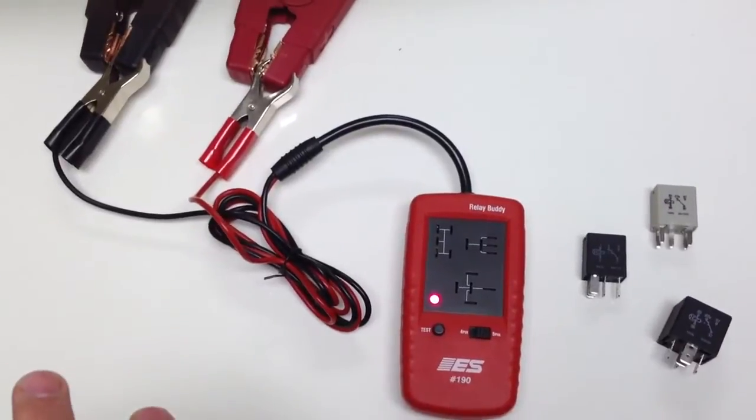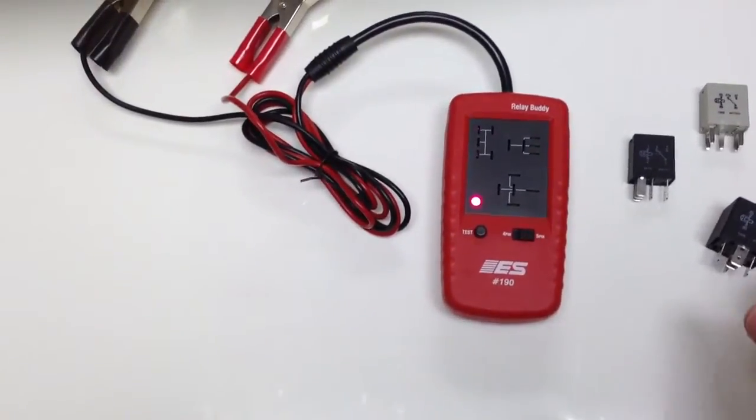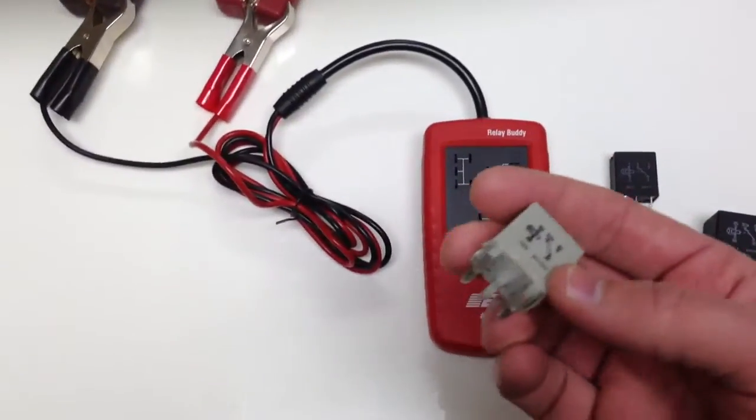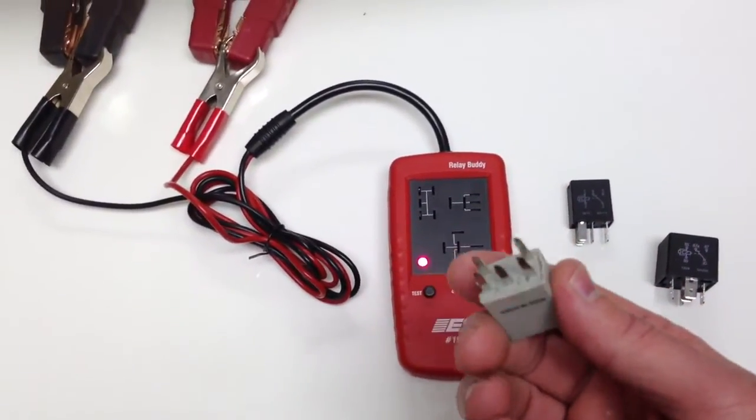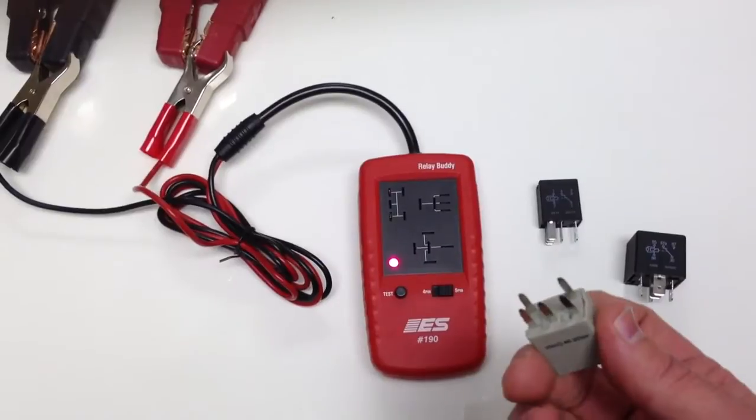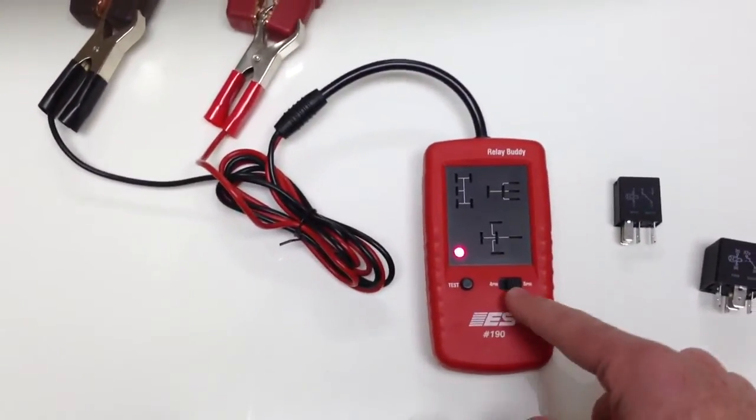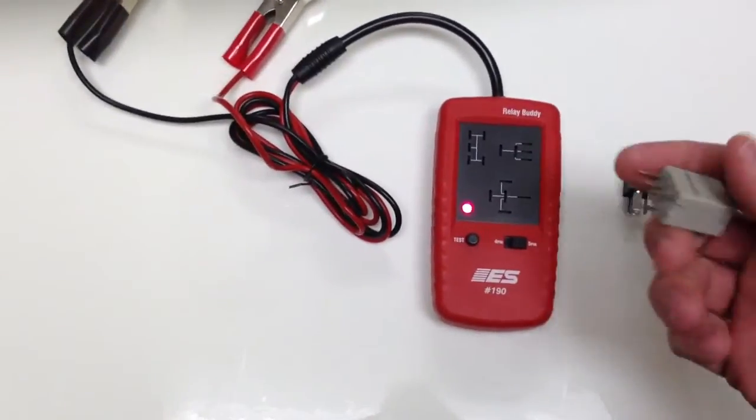So you would connect the Relay Buddy up to the car battery and then take whichever relay you've got to test. You'll notice this is a 5 pin relay. So I'm going to select 4 or 5 pin on the Relay Buddy. I've got it set to 5 pin.